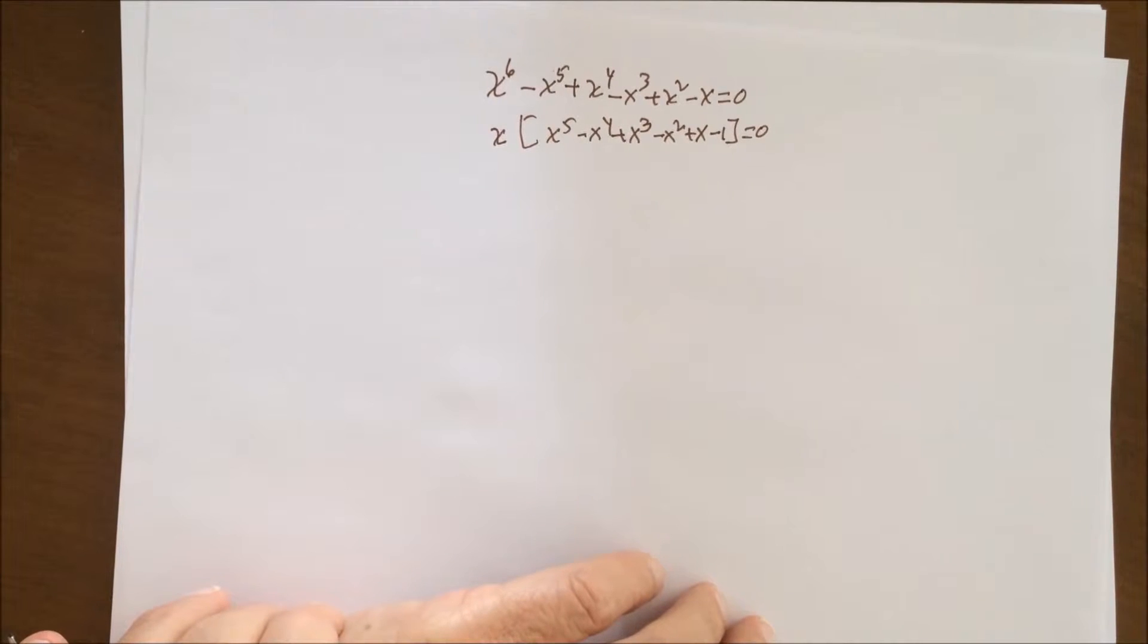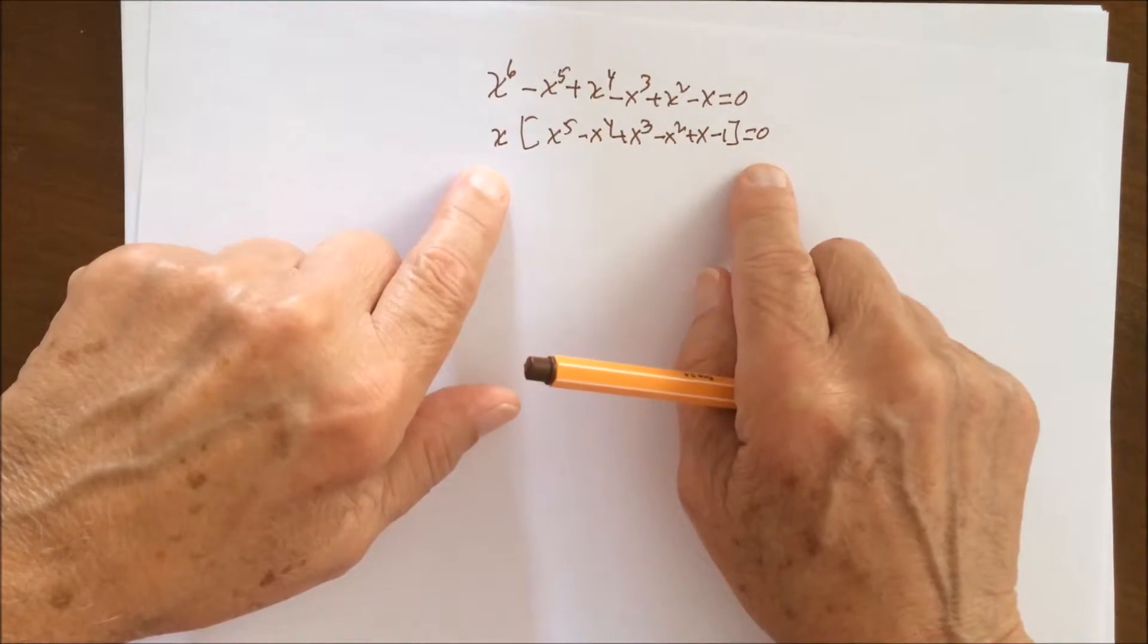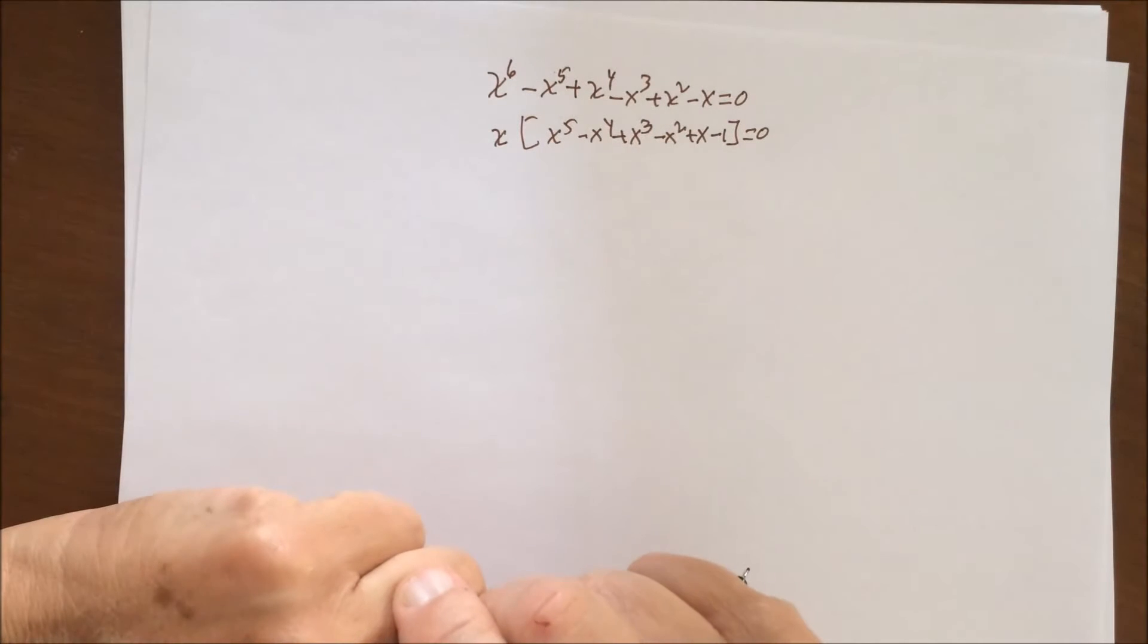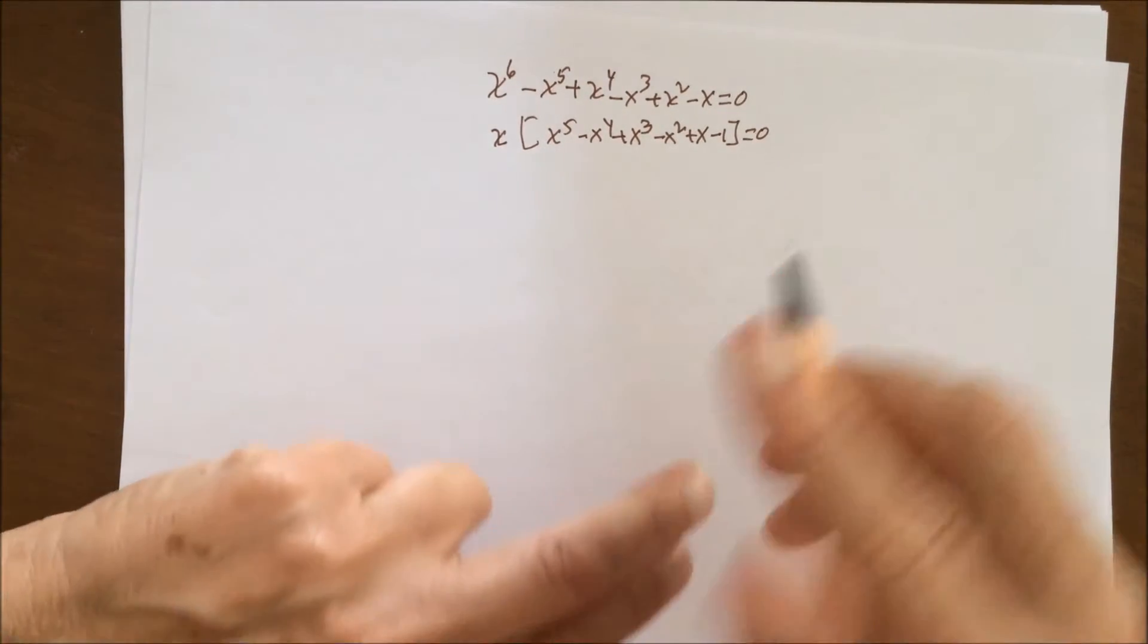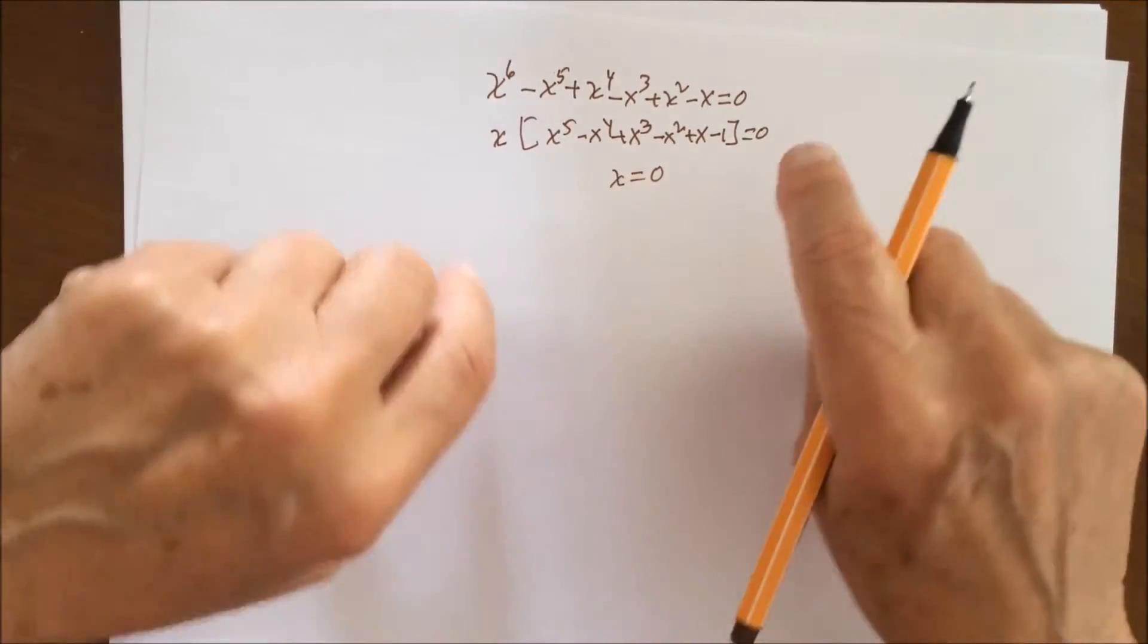So immediately we see one solution to this equation, which is an obvious one: x equals zero. Why? Because we have the product of two terms equaling zero, and we can invoke something called the zero principle, meaning if we have the product of two or more terms equaling zero, then at least one of the terms must be zero.